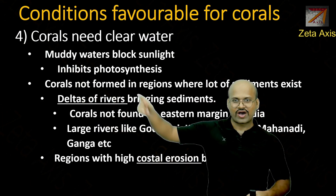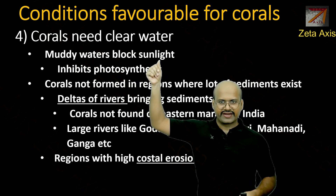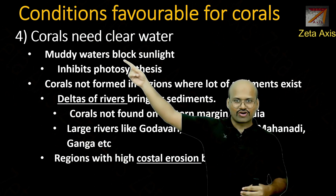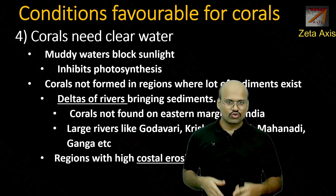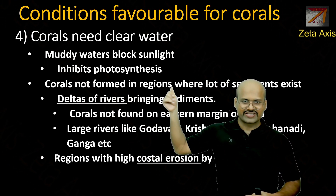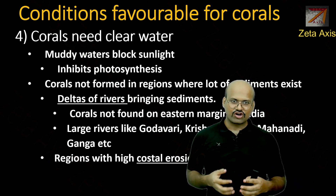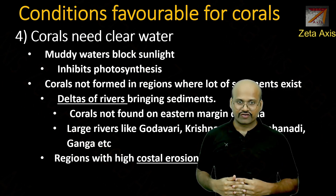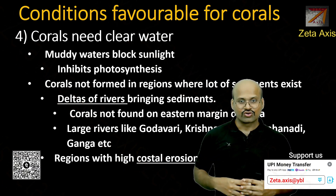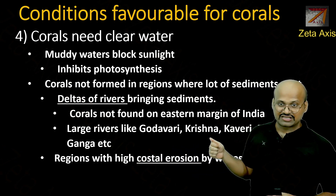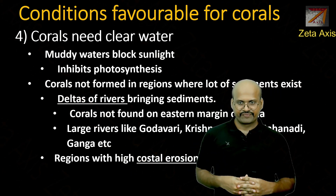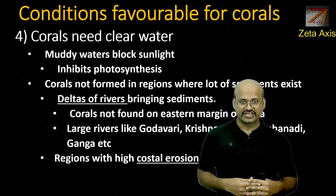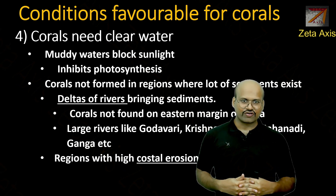The fourth important factor is that corals require clear water. Muddy waters block sunlight, preventing the zooxanthellae algae from performing photosynthesis and producing food for the coral. Corals are not found in regions with large amounts of river sediment, as rivers deposit sediment when they enter the ocean, creating muddy waters. This is another reason corals are absent on the eastern margin of India, where the Godavari, Krishna, and Kaveri bring large amounts of sediment. Regions with high coastal erosion also create muddy water that blocks sunlight, preventing coral formation.